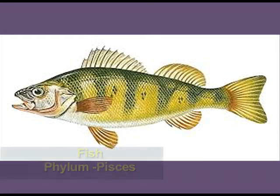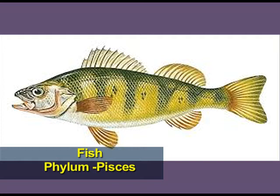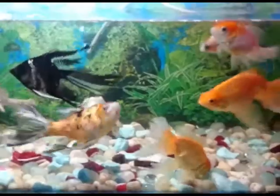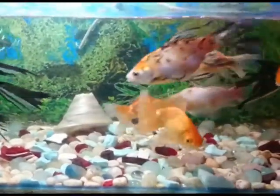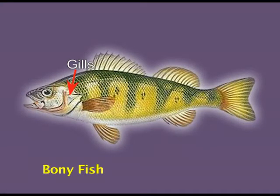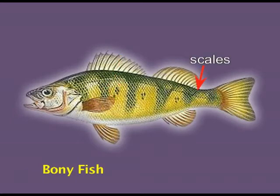The third example is a bony fish. A bony fish is characterized by a streamlined body, which offers least resistance when moving in water. Fish have specific features like gills covered by an operculum, which helps in respiration.